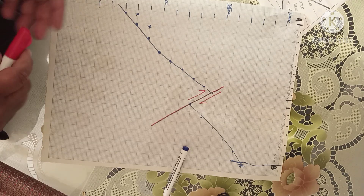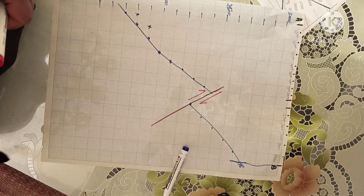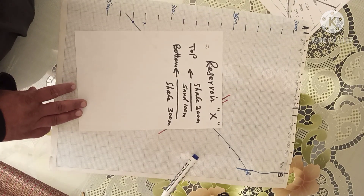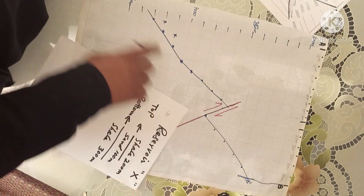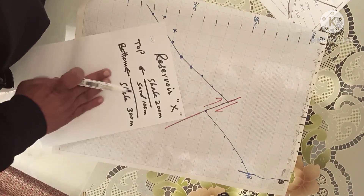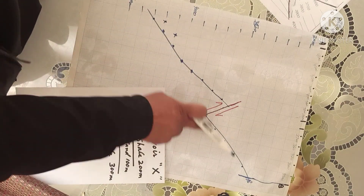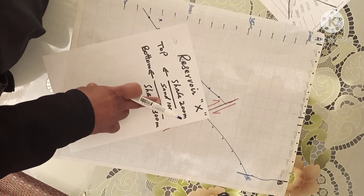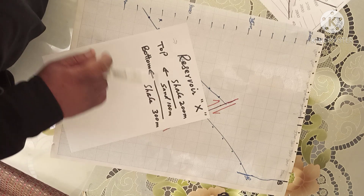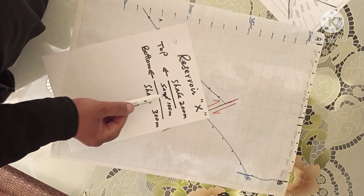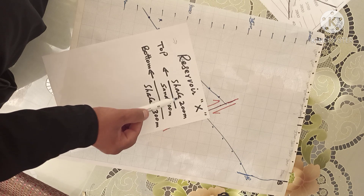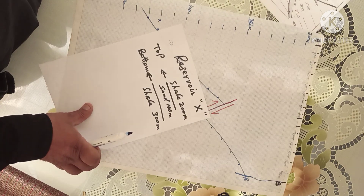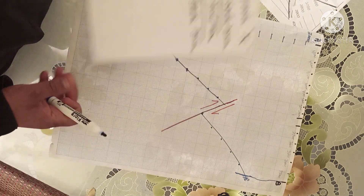From our lithological column we have certain data. We have the top of the reservoir — for example, Reservoir X — and this is the top of the reservoir. We have 100 meters of thickness of this reservoir, 200 meters of shale above, and 300 meters of shale at the bottom of the reservoir. We will post this data on the cross section.